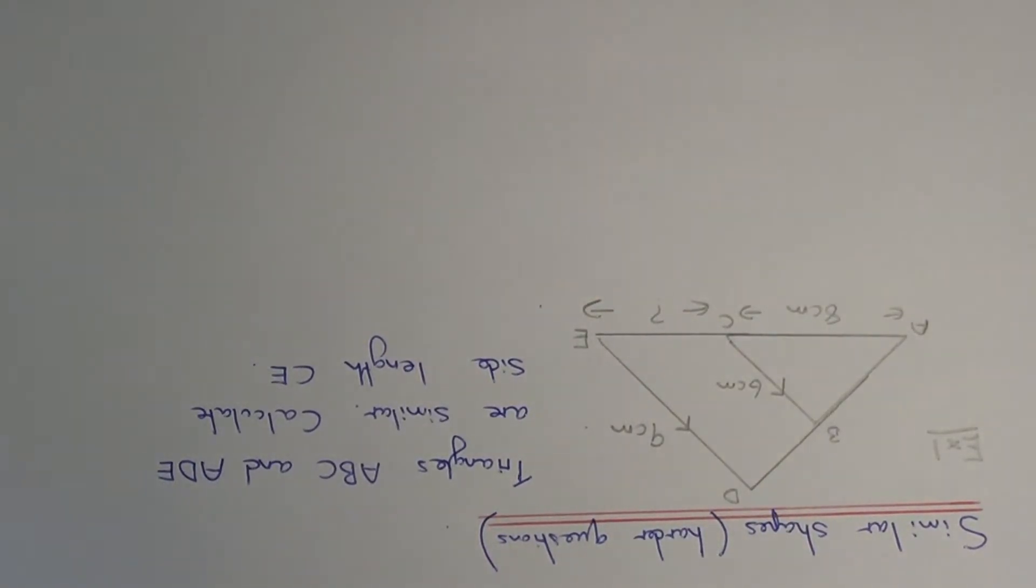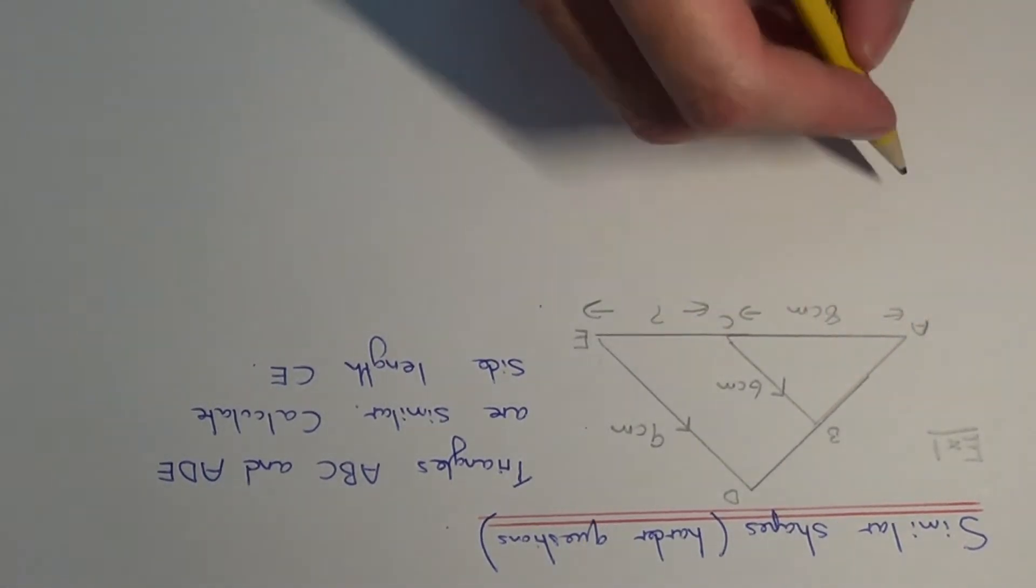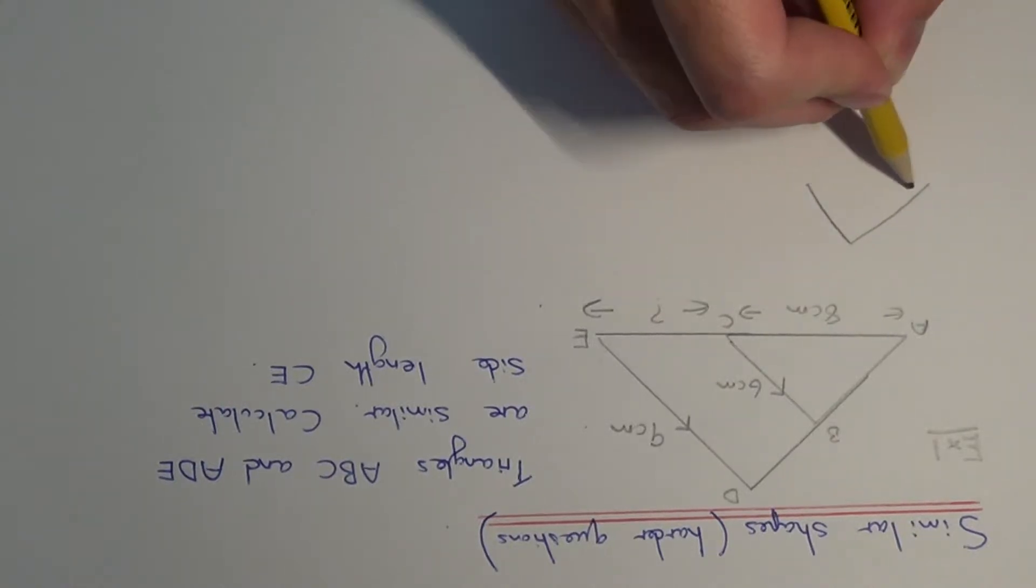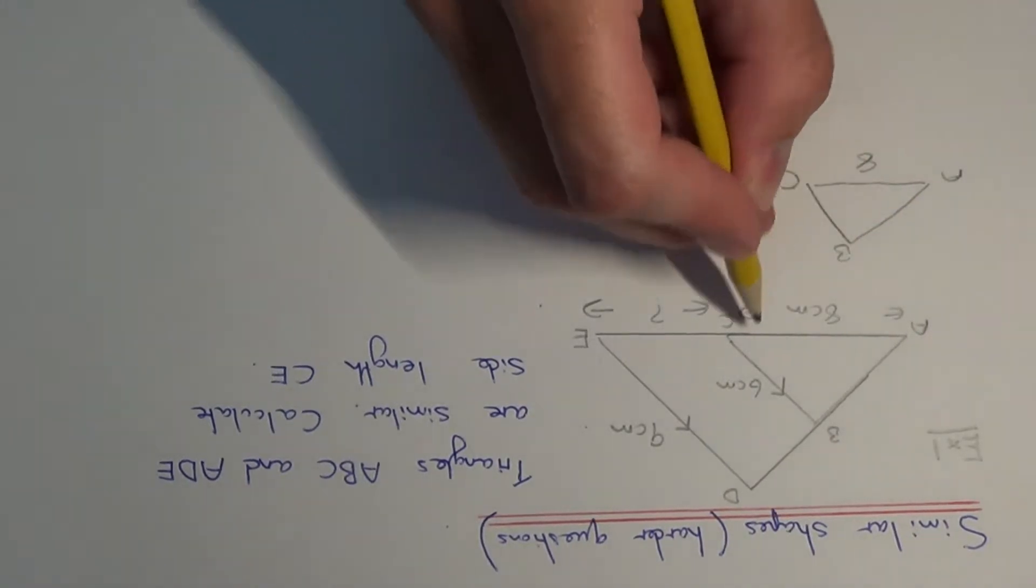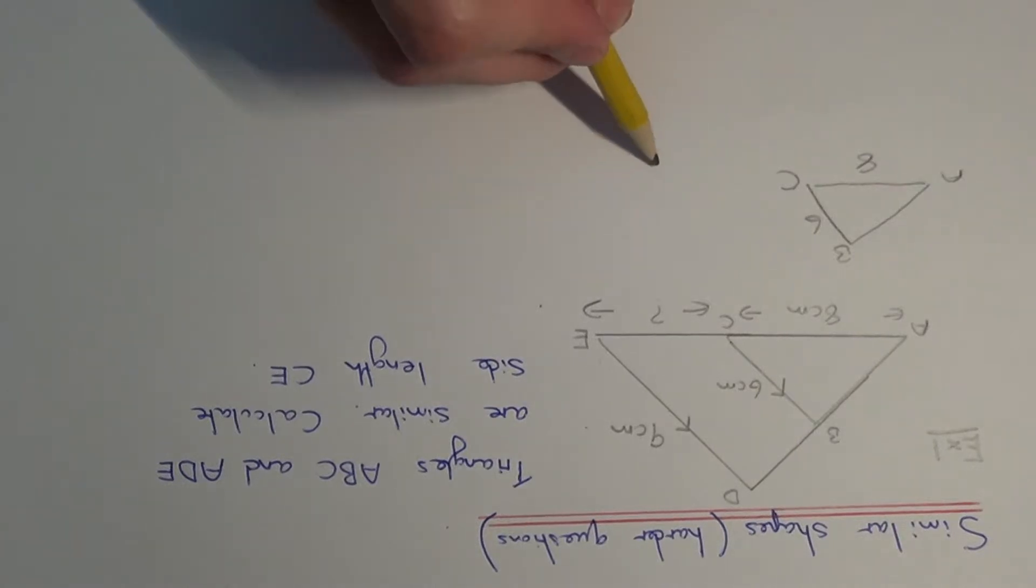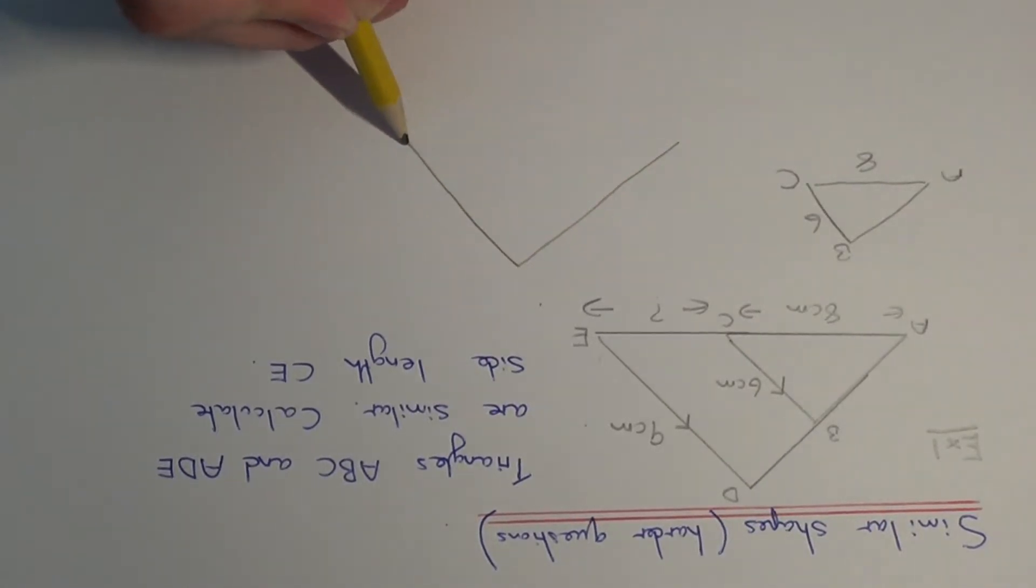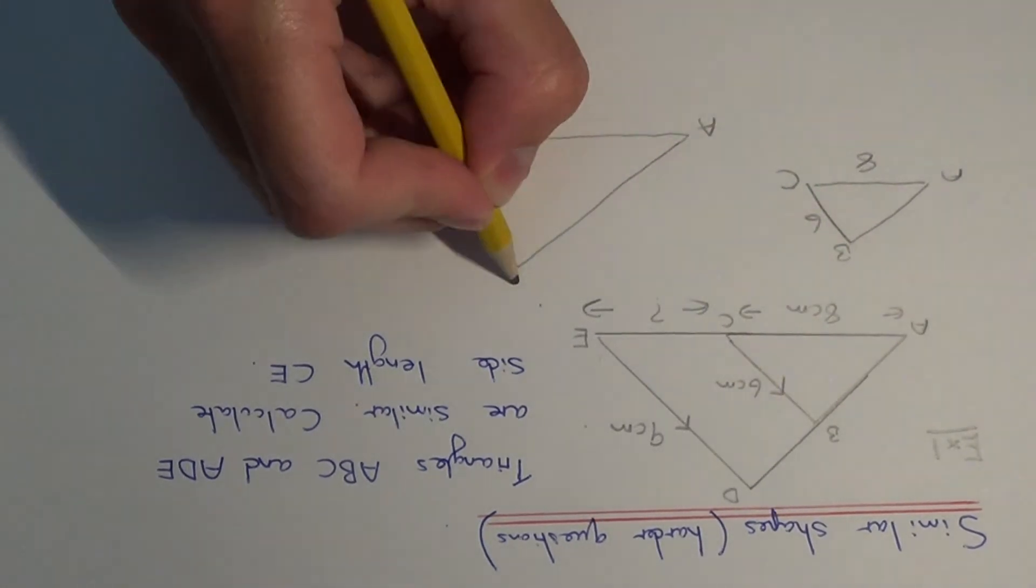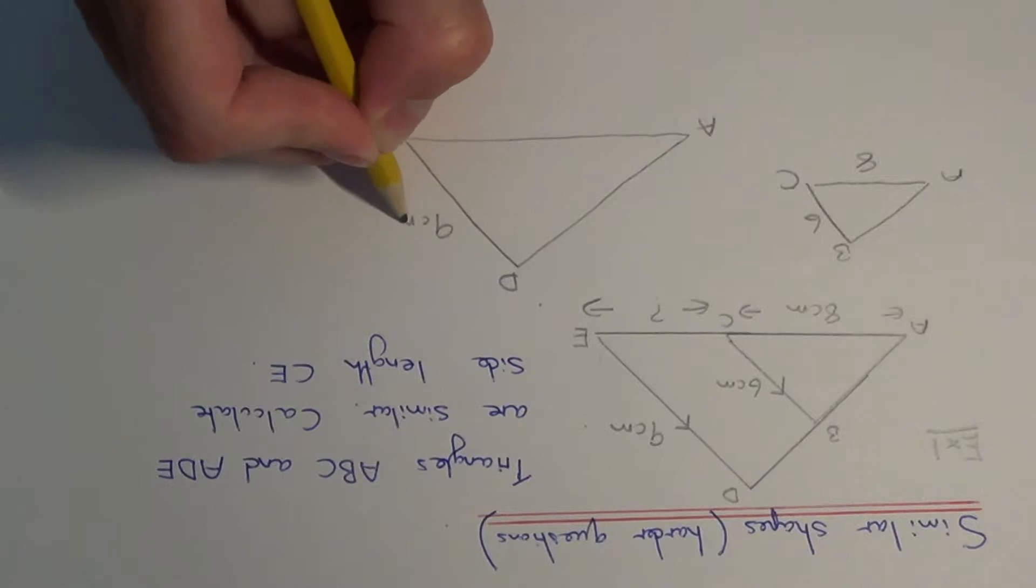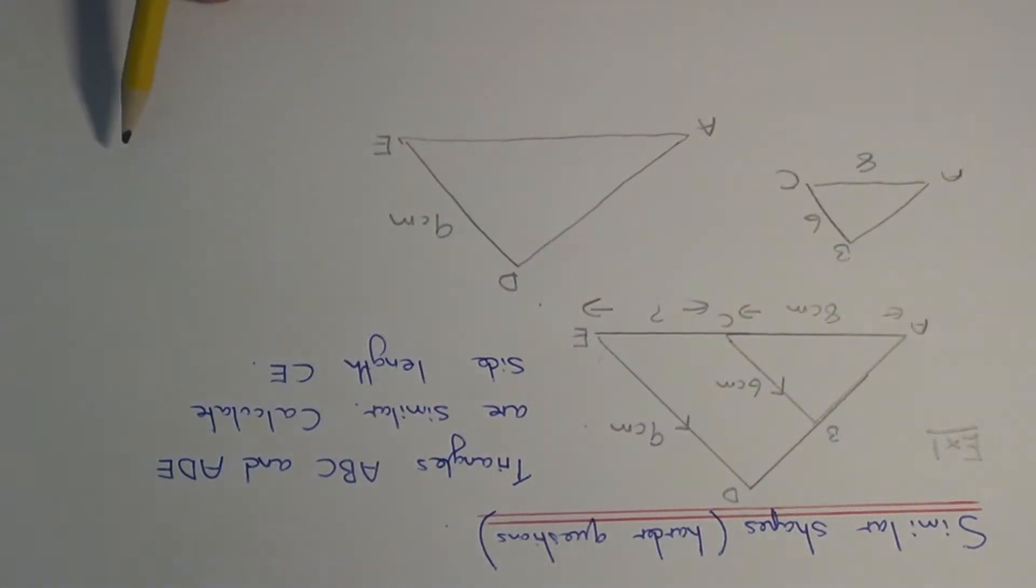So the first thing that I would advise is to draw out the two similar triangles. So we've got triangle ABC. AC is 8 and BC is 6, and then we've got the larger triangle. So this is an enlargement of triangle ABC. The sides on this triangle have been enlarged by the same scale factor which we need to find. We've got DE which is 9cm and that's all we have.